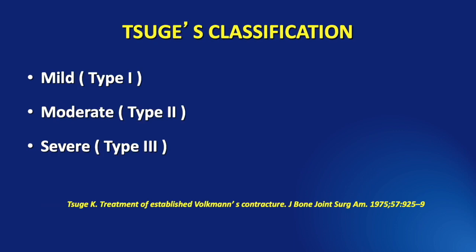Though the condition has been classified by Seddon, Zancolli, and Tsuge, it is Tsuge's classification that is commonly used — that is, mild or type 1, moderate or type 2, and severe or type 3.